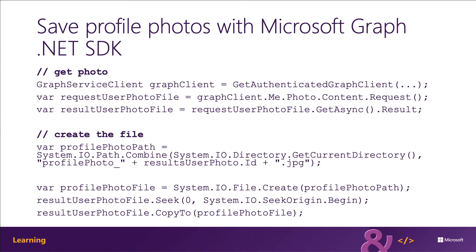The following code shown here on the slide uses the Microsoft Graph .NET SDK to request the profile photo for the currently signed-in user and save it on disk as a JPEG. First, we're getting an instance of the authenticated graph client and then getting the actual photo, storing the result in the resultUserPhotoFile variable. We then create a new file on disk using the System.IO namespace, specifying the path as profile_photo_{GUID}.jpeg. We then create the photo, read all the data in, and save it to the profile photo object.